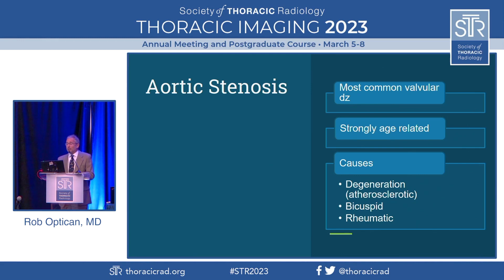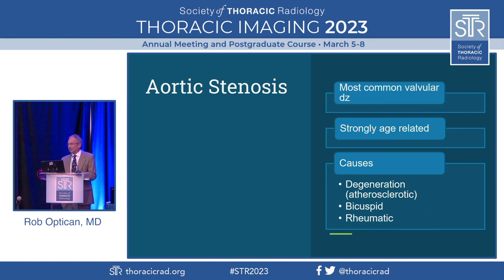Aortic stenosis is the most common valvular heart disease in the developed world. Its prevalence is about 2 in 1,000 for 50-year-olds, but rises to 100 per 1,000 in 80-year-olds. Age-related degeneration accounts for the majority of cases in the U.S. The typical risk factors are the same as those for atherosclerosis, such as hypertension and smoking. Bicuspid aortic valve anatomy leads to degeneration much more rapidly than occurs with normal tricuspid anatomy. Rheumatic aortic stenosis still occurs but is less common in the developed world due to antibiotic treatment for group A strep.